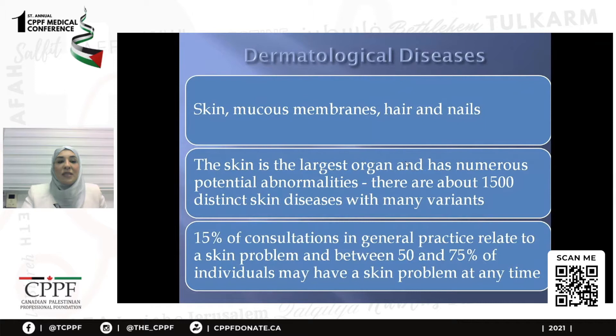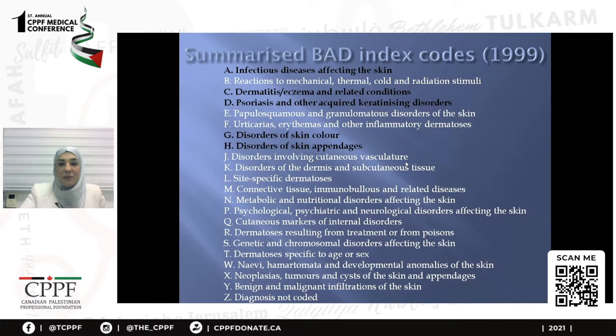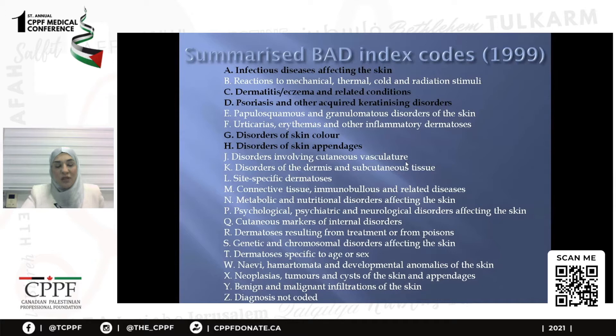When we talk about dermatological diseases, we discuss diseases that affect the skin, the mucous membranes, the hair, and the nails. The skin is the largest organ and has numerous potential abnormalities, which could reach up to 1,500 with many variants. 15% of consultations in general practice relate to a skin problem, and between 50 to 75% of individuals may have a skin problem at one time. Classification of dermatological diseases is difficult, but one accepted form is the British Association of Dermatologists' index code from 1999, categorized A to Z.